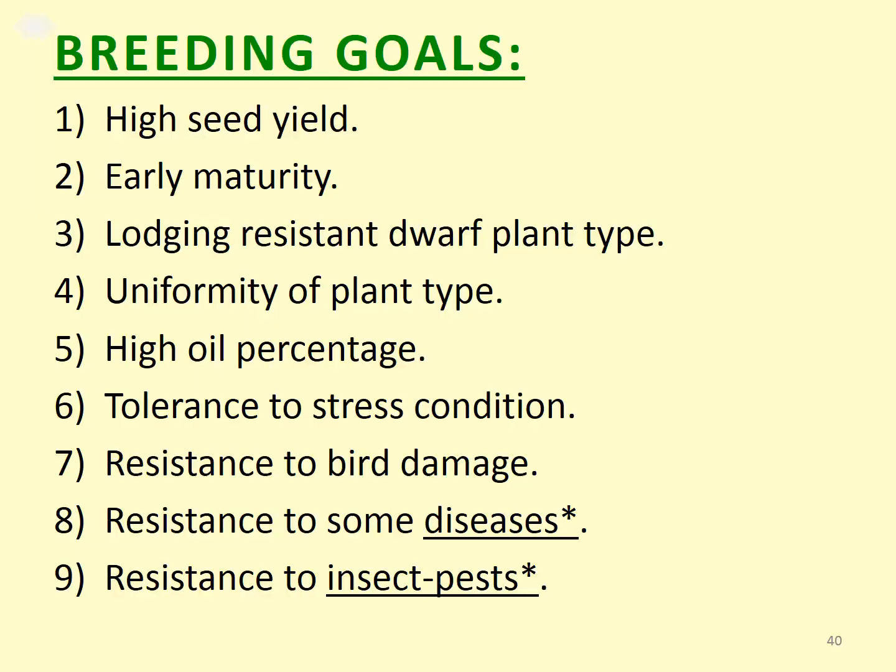Breeding goals of sunflower include: high seed yield, early maturity, lodging resistance, dwarf plant type, single head type, uniformity of plant type, high oil percentage, tolerance to stress, resistance to bird damage, and resistance to diseases and insect pests.